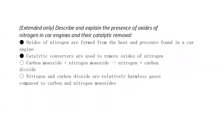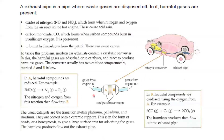Oxides of nitrogen are formed from the heat and pressure inside the engine. The catalytic converter is used to remove oxides of nitrogen and carbon monoxide: carbon monoxide plus oxides of nitrogen gives nitrogen and carbon dioxide. Nitrogen and carbon dioxide are relatively less harmful compared to carbon monoxide and nitrogen monoxide. The catalytic converter reduces the emission of these pollutants.